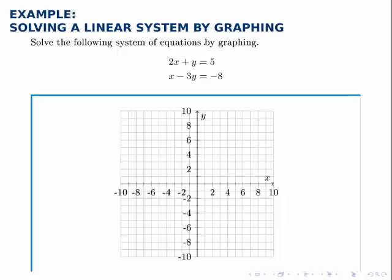Just for practice with graphing, I'll graph the two lines in two different ways. The first line I'll graph by rewriting in slope-intercept form. If I isolate y, I get y equals negative 2x plus 5. The y-intercept is 5 right here, and the slope is negative 2, so over 1 down 2. Now we can connect those two points and get the first line.